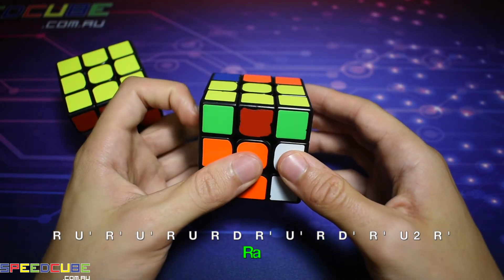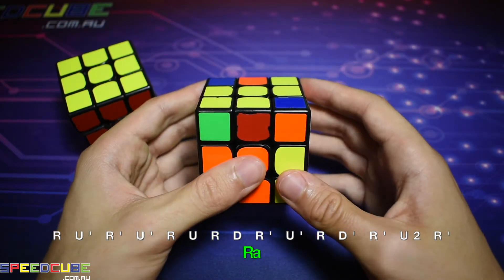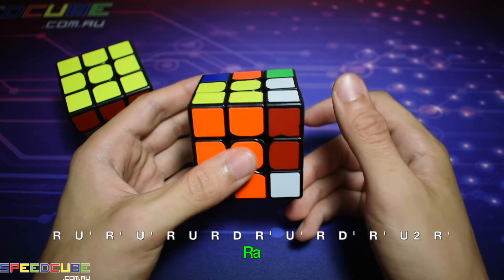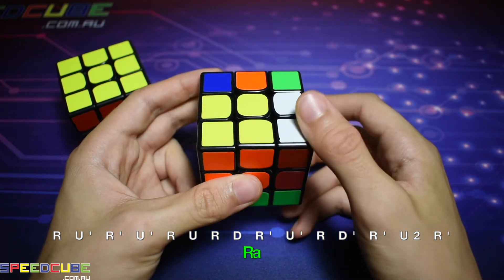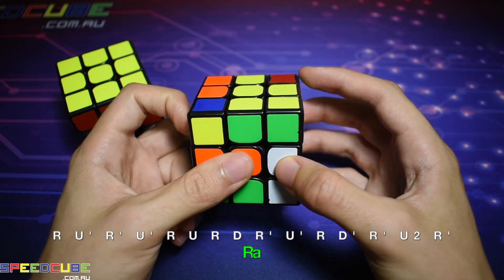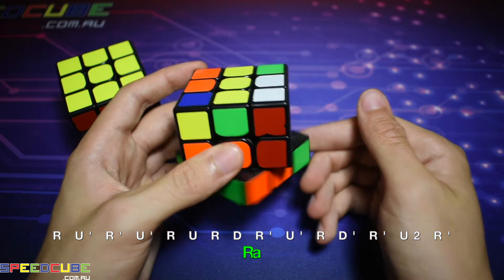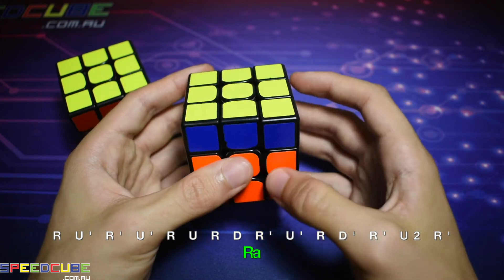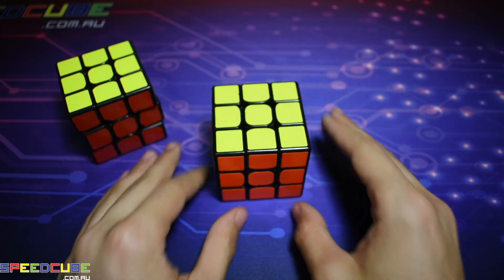Right, up inverted, right inverted, up inverted, right, up, right, down, right inverted, up inverted, right inverted, up 2, right inverted. Those are the R patterns.